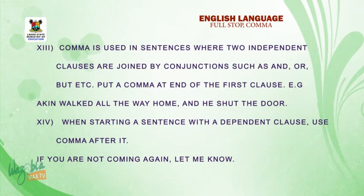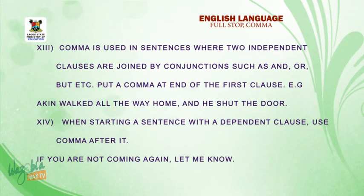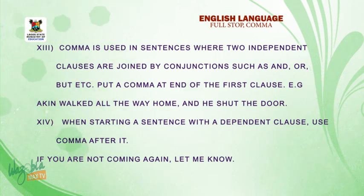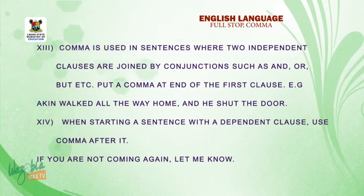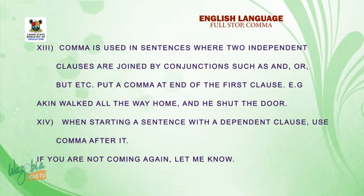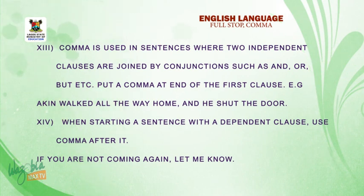Number thirteen: comma is used in sentences where two independent clauses are joined by conjunctions such as and, or, but, etc. Put a comma at the end of the first clause. E.g., I can walk all the way home, and shut the door. Number fourteen: when starting a sentence with a dependent clause, use a comma after it. E.g., If you are not coming again, let me know.